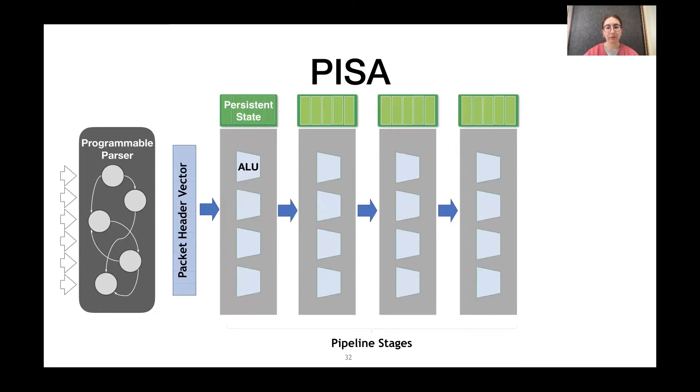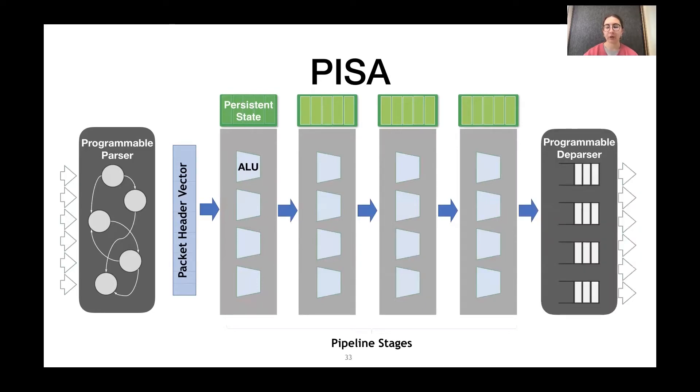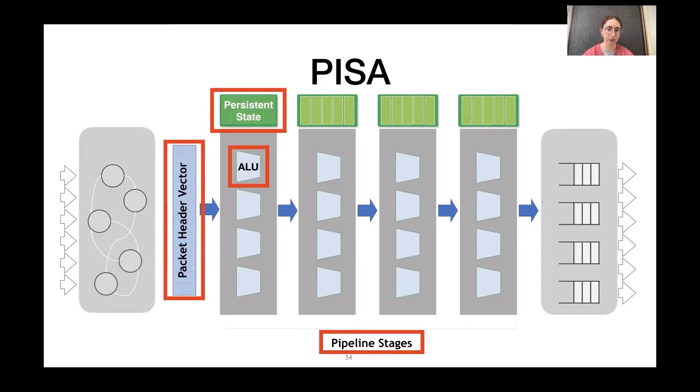Once the packet reaches the end of the pipeline, it goes through the programmable deparser and then exits the switch. Now, the number of stages and the resources associated with each stage are quite limited. And these limitations are why elastic data structures work so well.